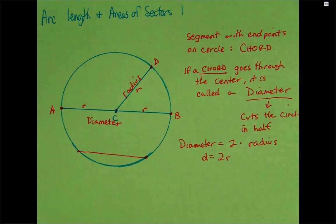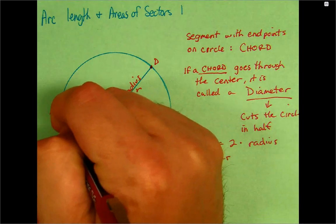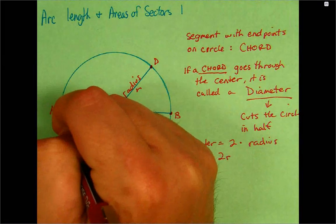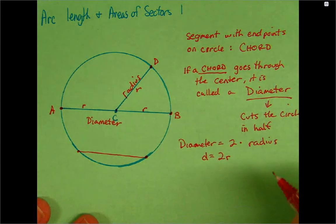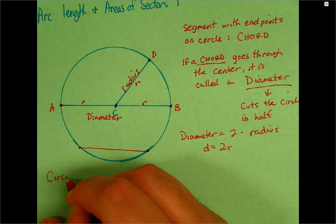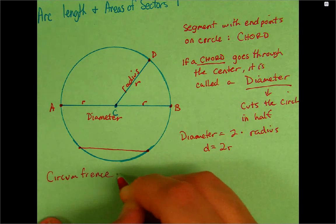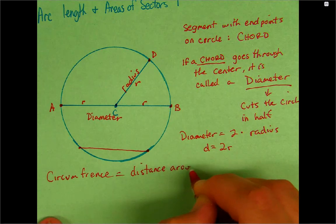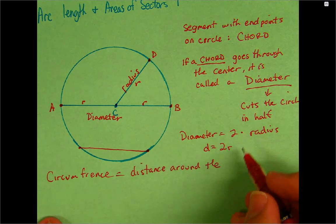Now, when mathematicians first started really examining circles, they found that if they were able to take, if I started at A and measured all the way around the circle and got back to A, that's called a circumference. So, circumference is equal to the distance around the circle.